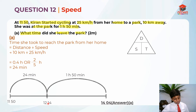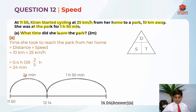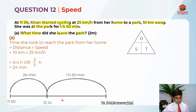To work through the arithmetic: from 11:50 to 12:14 is 24 minutes of cycling. Then from 12:14, we add 1 hour to get 13:14, then add another 50 minutes. We can round up to 1 hour, making it 14:14, then subtract the extra 10 minutes to get 14:04. So 14:04 is the answer for Part A.